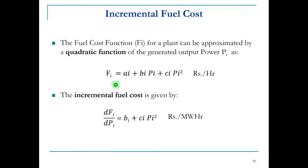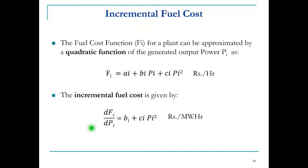Let Pi be the power output generated by the ith station. The fuel cost function for the ith station is: Fi = Ai + Bi·Pi + Ci·Pi², where A, B, C are constants and Pi is the actual active power generated. The incremental fuel cost is the first derivative of the fuel cost function with respect to power generated: IC = dFi/dPi = Bi + 2·Ci·Pi, expressed in rupees per kilowatt-hour.